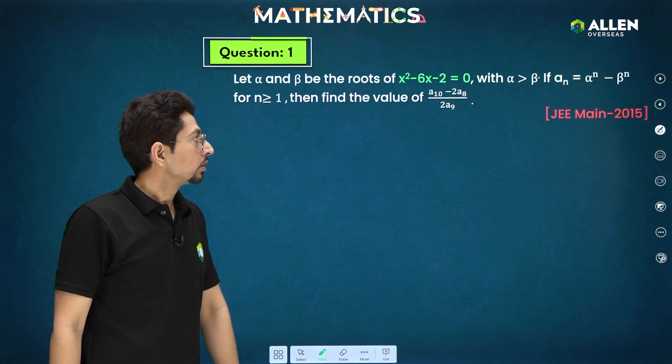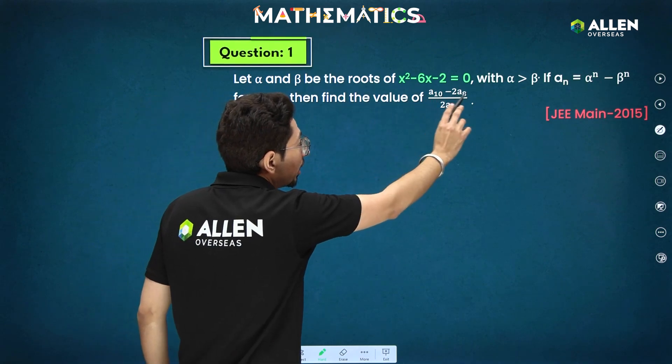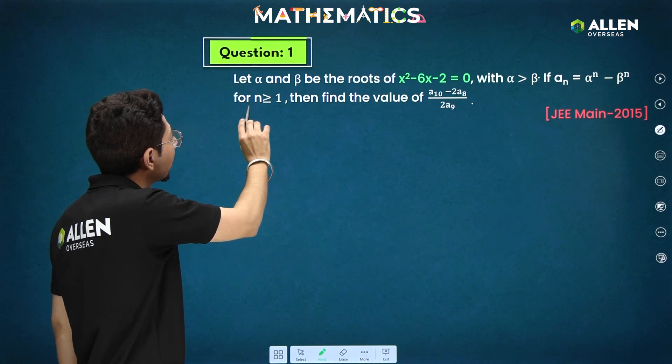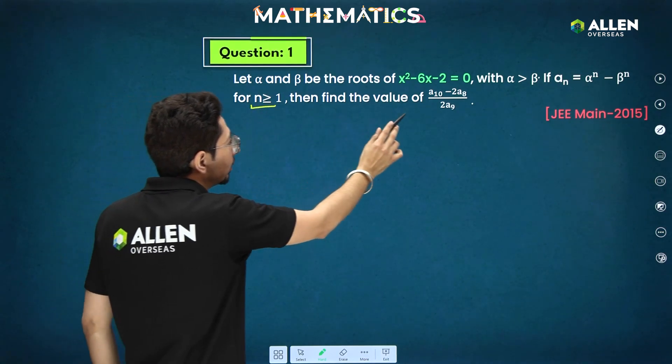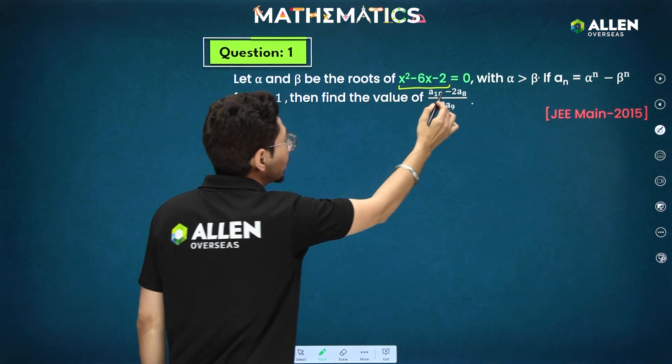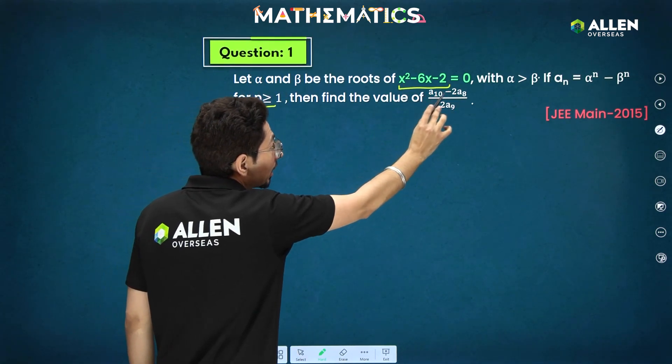Proceeding with first question, let alpha beta be the roots of this quadratic with alpha greater than beta. If an is defined as alpha power n minus beta power n for n greater equal 1, you will find this value. Very simple. This value will be directly with respect to this only. We require a10, a8, a9.